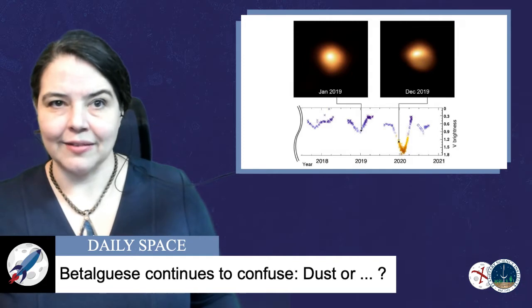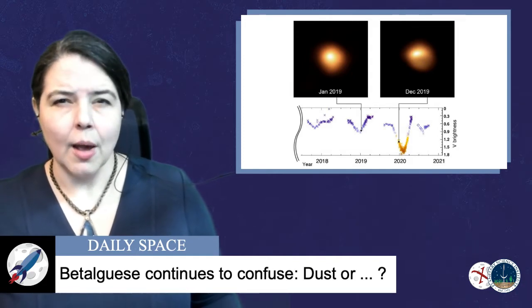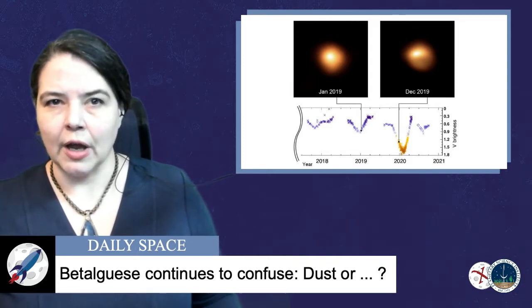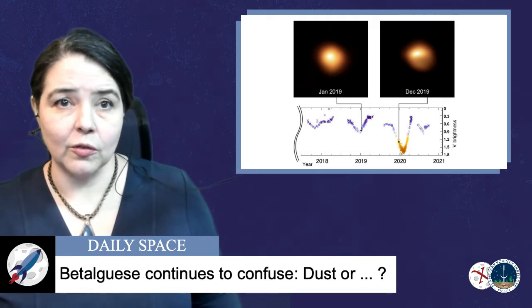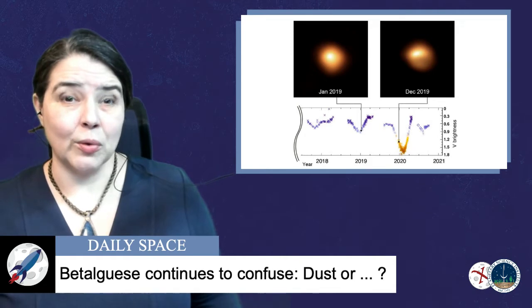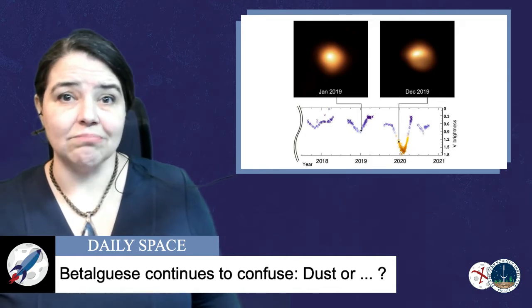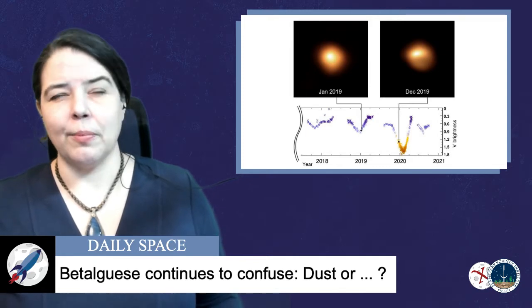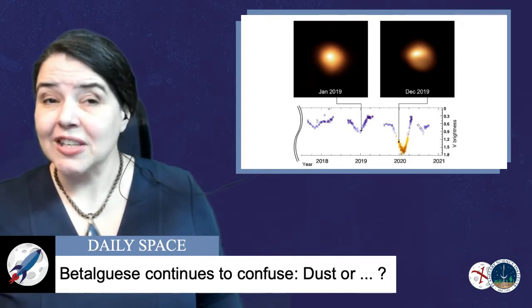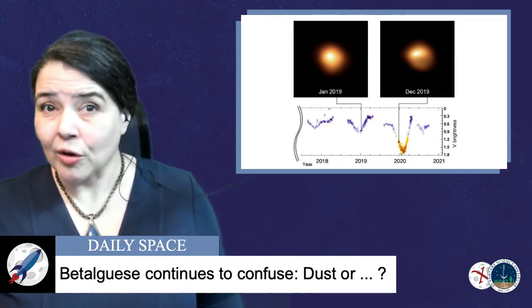It seemed that dust was the most likely culprit, with the color of Betelgeuse not changing the way you'd expect with a temperature drop, and with changes over time looking more dust-like than star spot-like. But looking more like something and actually being that something, those aren't the same.